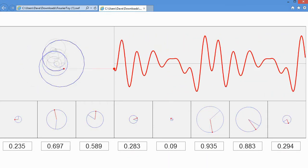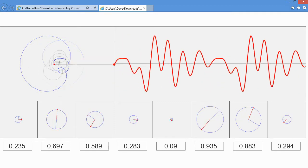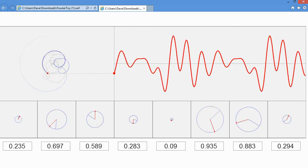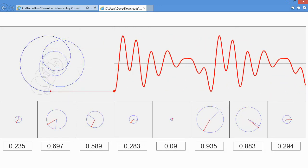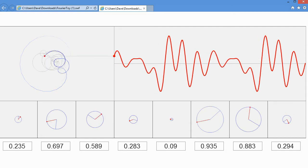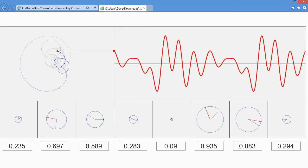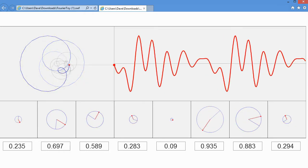Turns out that it requires much less data to define a waveform using the frequency domain than the time domain. We only need specify the frequencies present, their amplitude, and perhaps phase. This is the foundation of picture, video, and audio compression techniques such as JPEG and MPEG.